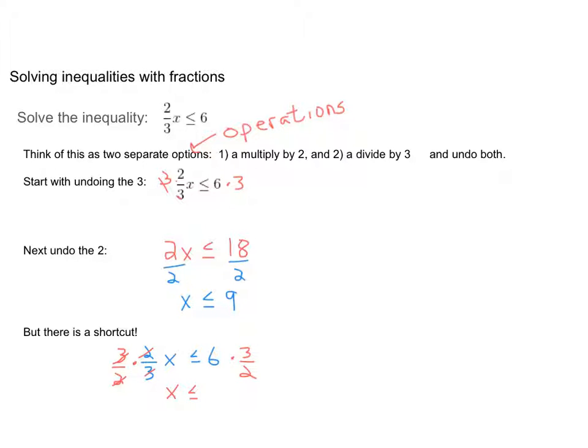Okay, so what happens on the right-hand side, though? Well, we haven't done these in a while, but we could think of this as 6 over 1. And remember, when we multiply fractions, we multiply across. So that's going to give us 18 over 2. And of course, that's the same as 9, which is what we got above.